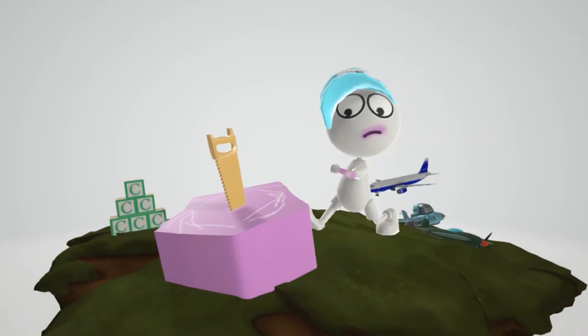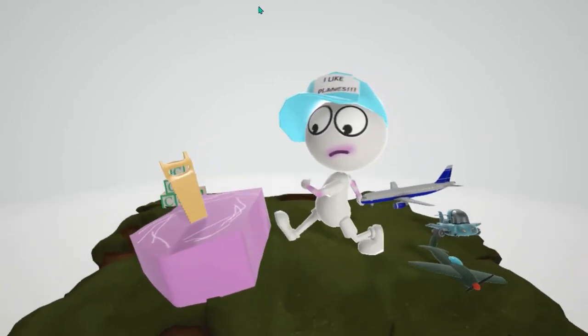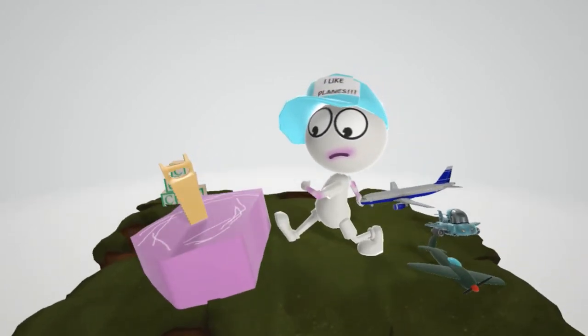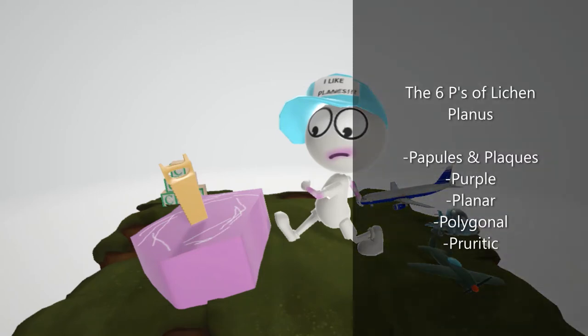This purple polygon is going to help us remember different features of lichen planus. Lichen planus can be characterized by the six P's: the papules and plaques, two P's are there.